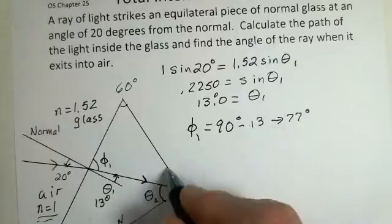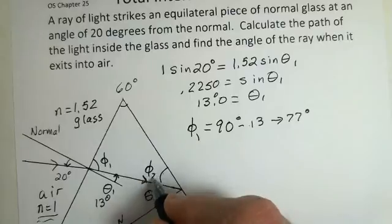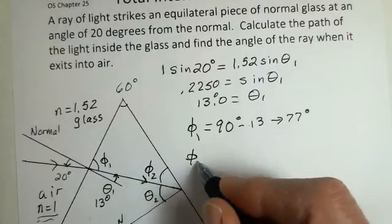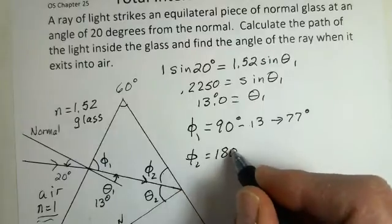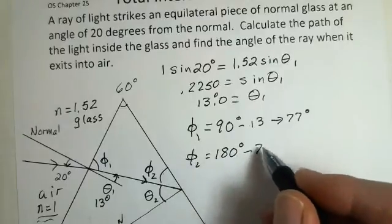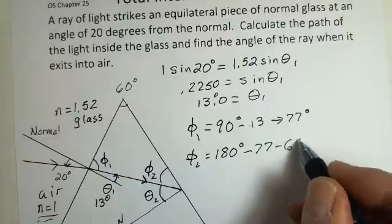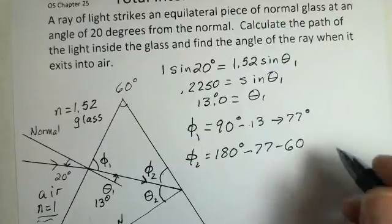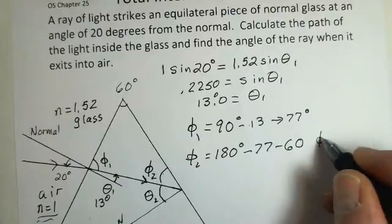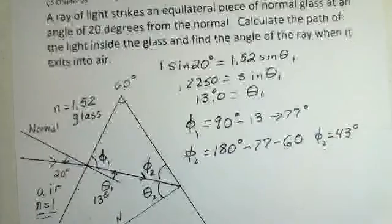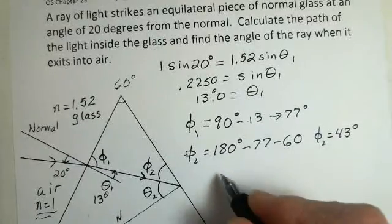Now I'll create another angle, phi 2. The full triangle has 180 degrees inside. Phi 1 is 77 degrees, and at the top of the triangle there's 60 degrees. That gives phi 2 = 180 minus 77 minus 60, and I came up with 43 degrees. You should check that.